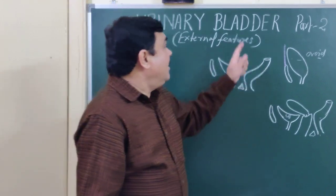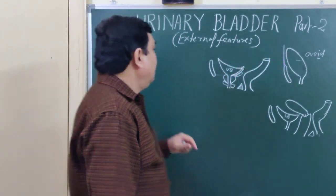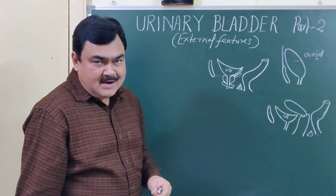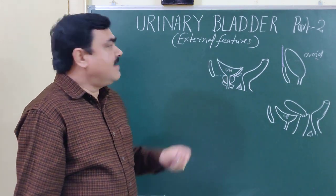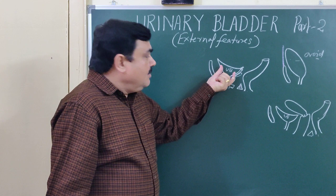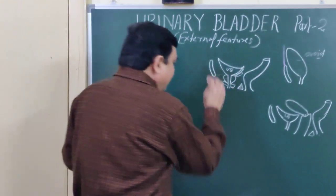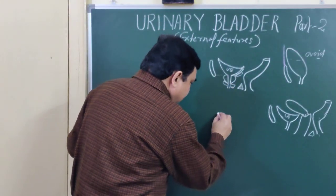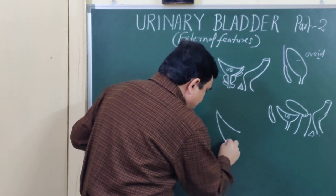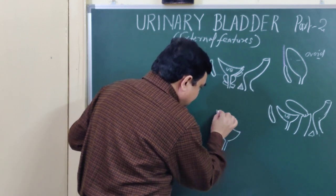In this part 2, we will discuss the external features of the urinary bladder. First, we will look at the external features of the empty urinary bladder.